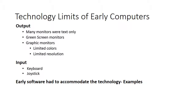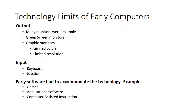Early software had to accommodate the technology — the same problem as with HP: you want to do advanced things but you have limited technology. I'm going to give examples from early games and how gaming has evolved, how application software has evolved, and of course computer-assisted instruction — which should be of particular interest to us.